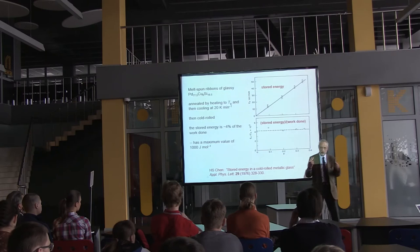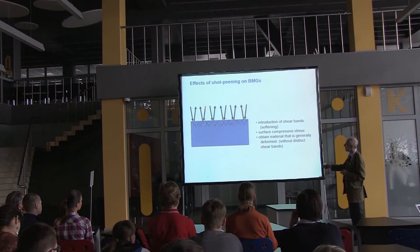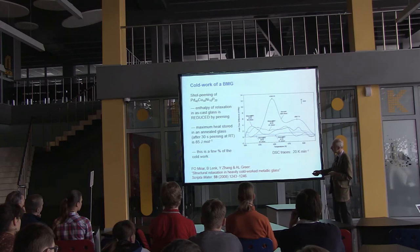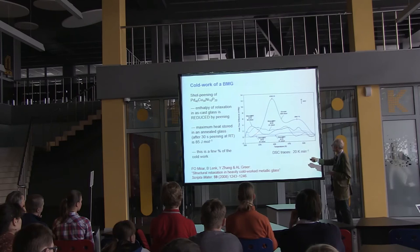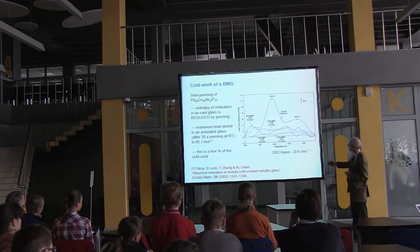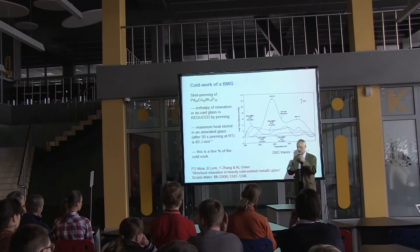There are other ways to store energy — shot peening, where balls fired at the surface create a heavily deformed surface layer, again storing a few percent of the cold work. However, this work had a surprise: the energy associated with the original material before cold work was more than the energy of the cold-worked material. In other words, deformation actually reduced the energy of the material — not higher, but lower. The deformation reduced the energy.